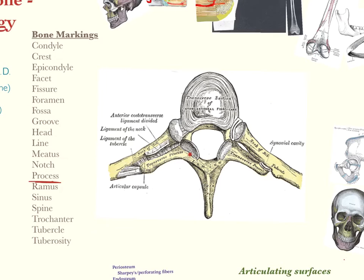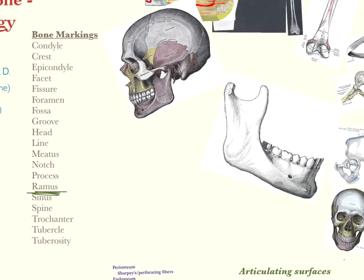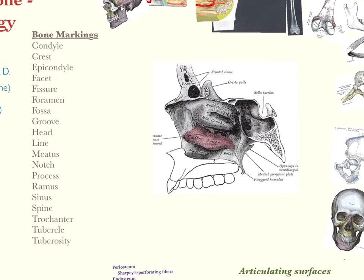A process refers to any part of a bone that sticks out prominently — almost like a three-dimensional peninsula of bone. Next is the ramus, which is an arm-like projection of bone — just like an arm reaching up and trying to articulate with another surface. A sinus is any kind of hole or open area inside a bone, such as the large sphenoidal sinus within the skull. These sinuses are often filled with air or sometimes mucosa.